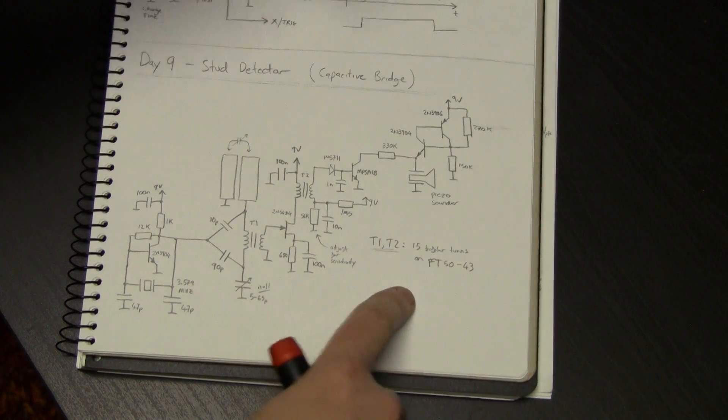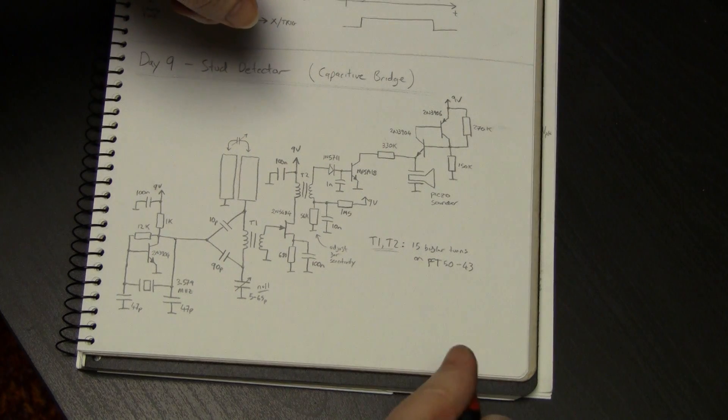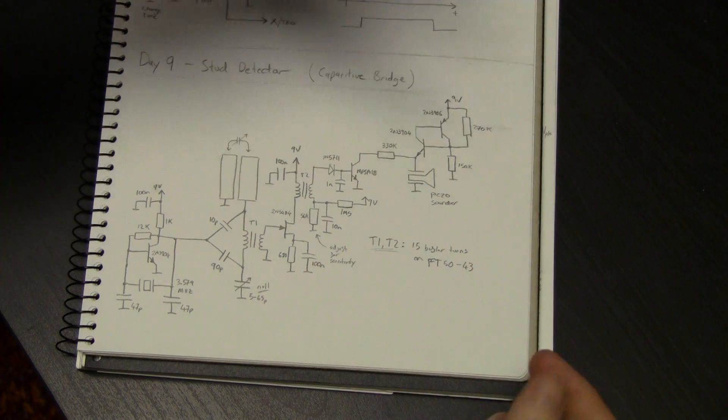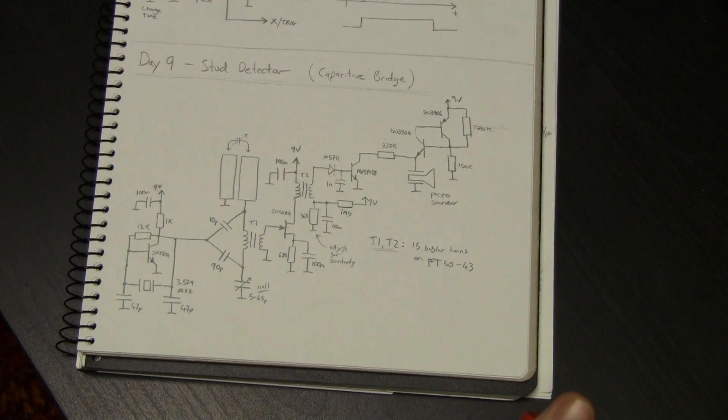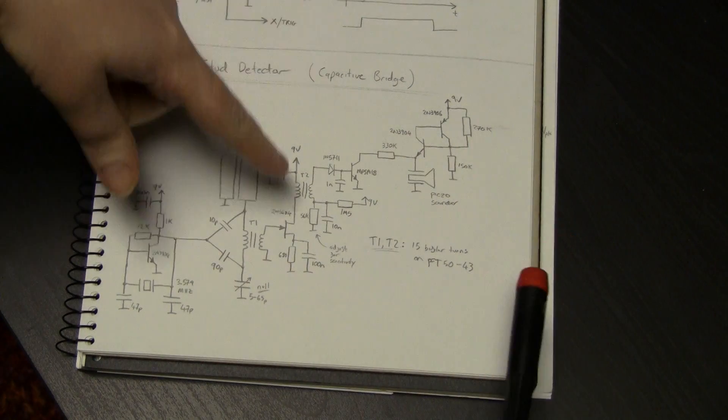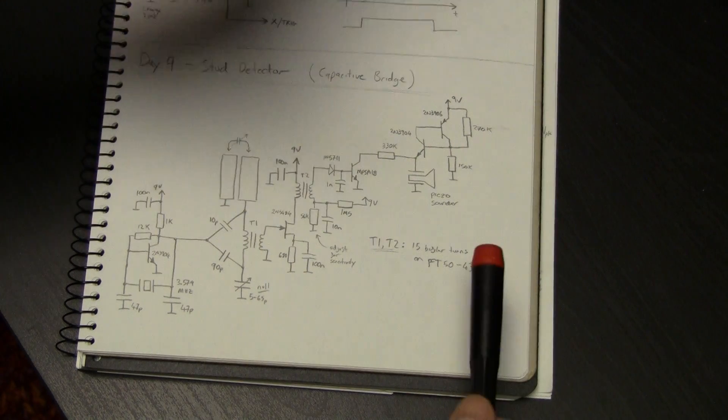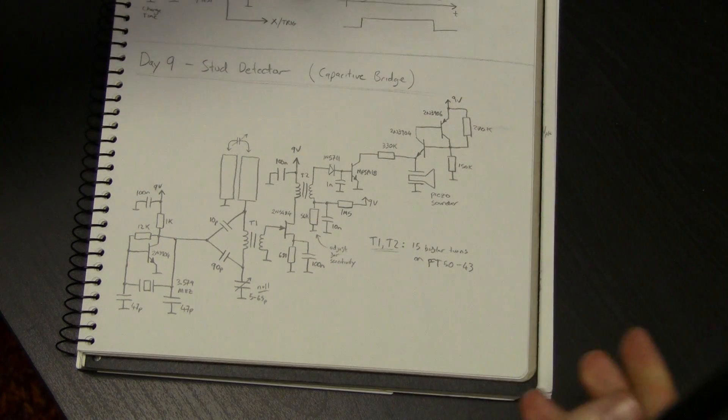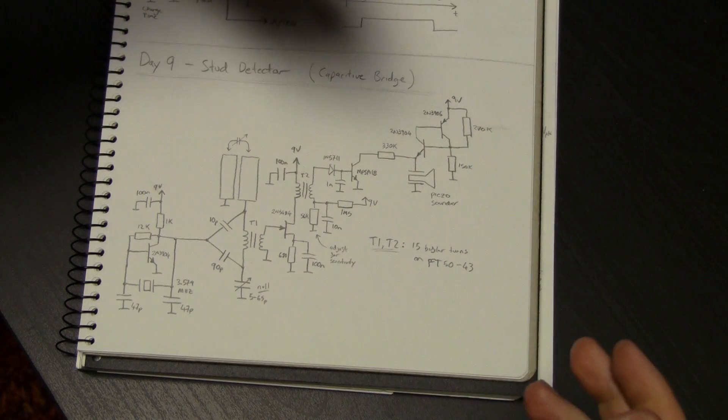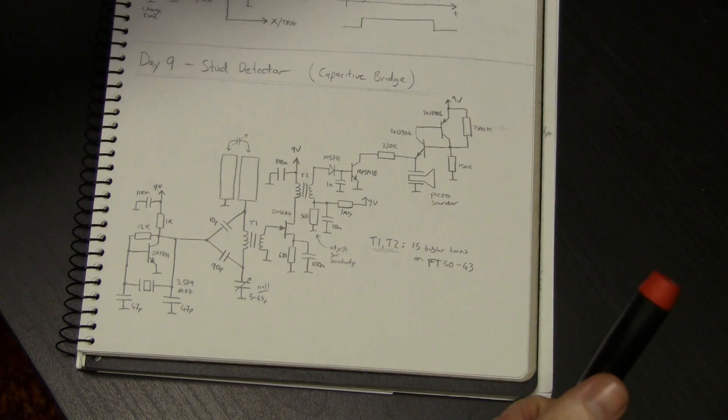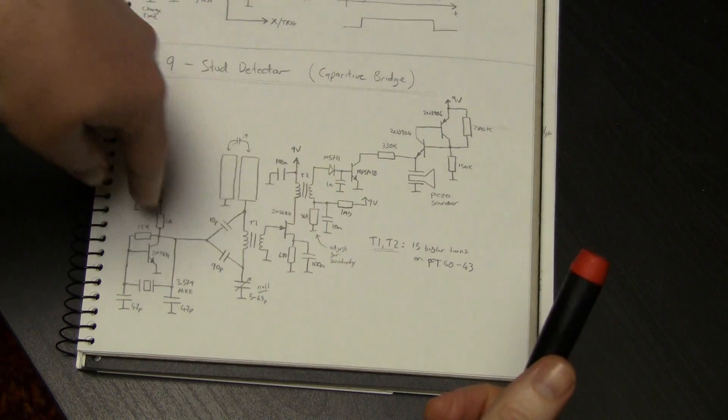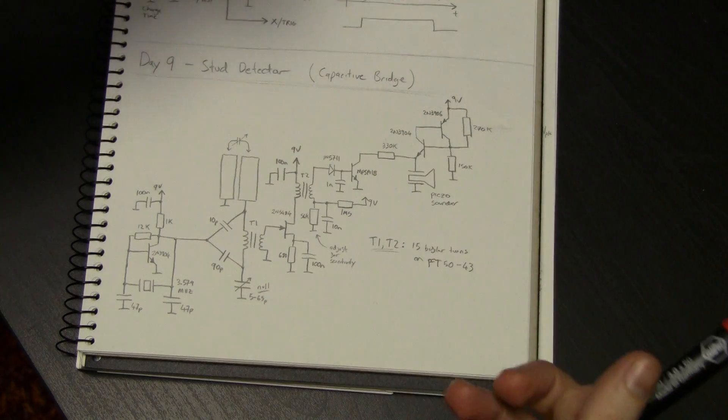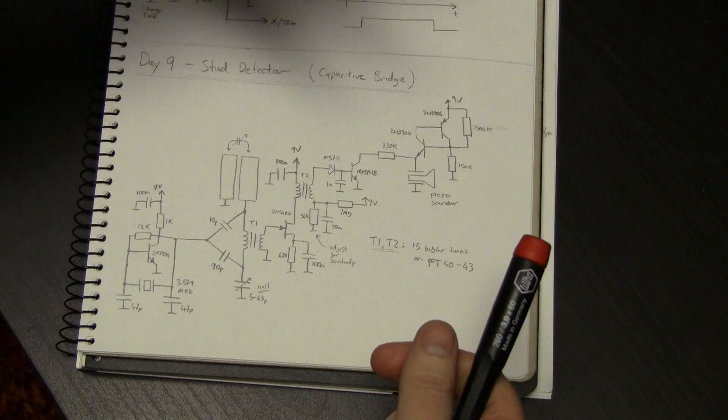So there's two transformers, both of which are identical. They're fifteen bifalor turns on a FT-50-43, so they're a high mu ferrite, so they have good coupling, and they've got about 160 microhenries of inductance for each winding, which is, for this frequency, it's just fine. There's a couple of rules about impedances. Generally, if a transformer is being used in an RF circuit, then it should have at least three, preferably five to ten times, the reactance of the load impedances that it will be seeing, so it'll basically work well and will not represent a lower impedance than what would be the load impedance.